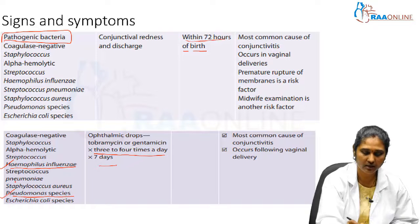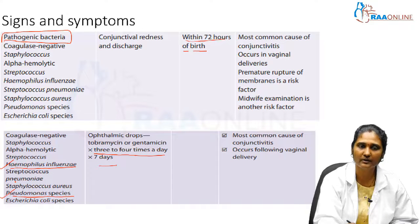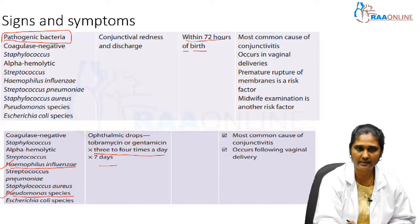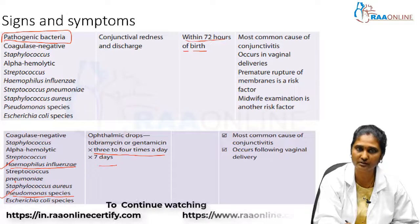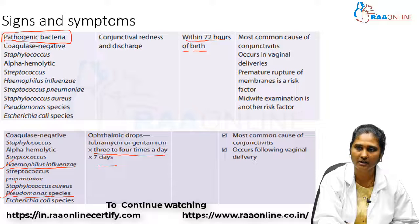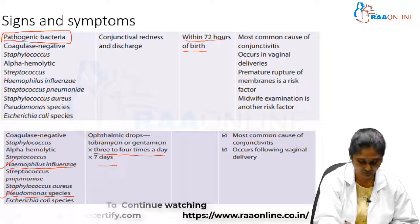However, severe neonatal conjunctivitis can sometimes occur even in the non-STD group, particularly with H. influenzae and Pseudomonas species, which may require IV therapy. When the child has severe conjunctivitis, one should also look for other signs of infection such as septicemia or meningitis.